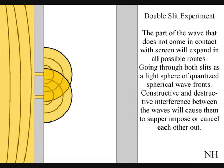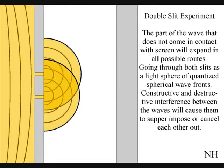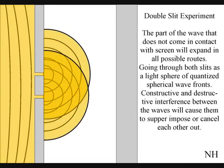The part of the wave that does not come in contact with the screen will expand in all possible routes, going through both slits as two light spheres of quantized wavefronts.